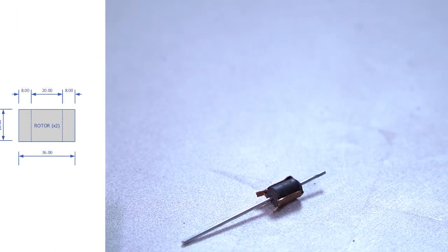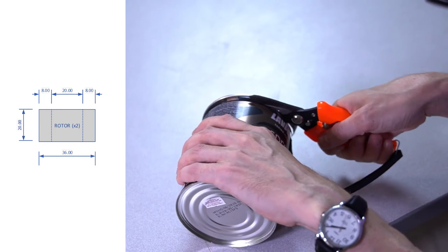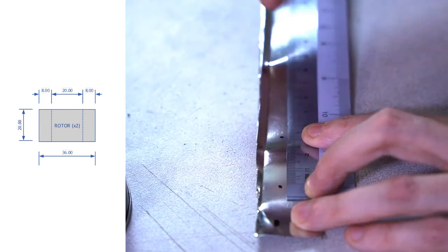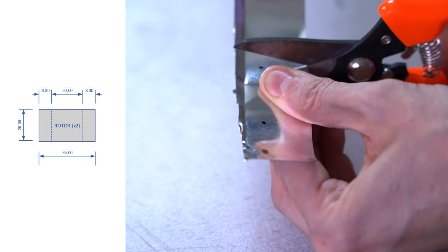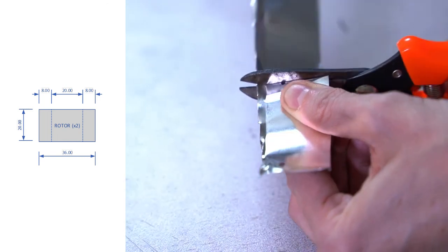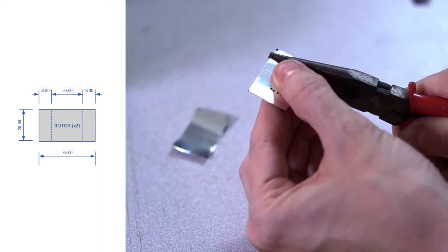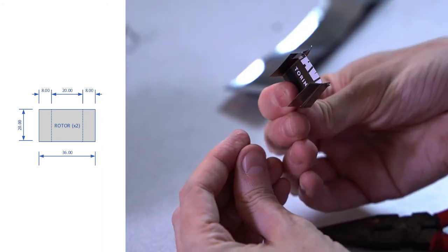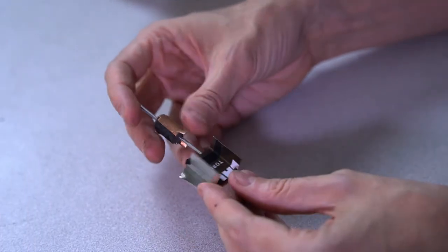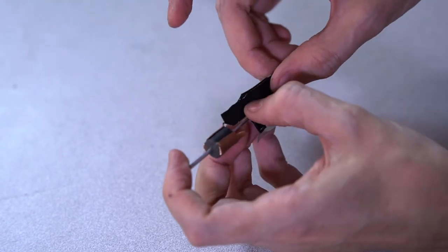To make the rotor, we'll need to cut two pieces of steel from the coffee can, 36 millimeters by 20 millimeters. You need to be really careful doing this because the metal could cause a bad cut. Then we'll fold them along the dotted lines eight millimeters from the ends and place them back to back with the motor shaft running through the middle. Use the tape to hold it in place.